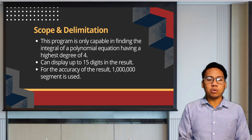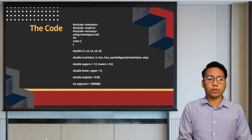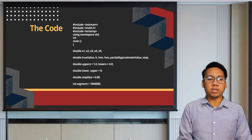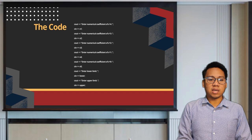In this code, we provided holders for the value of the numerical coefficients of the polynomial we will be solving, set as x1, x2, x3, x4, and x0. It is where the numerical coefficient values will be stored. The segment used for this program is set to 1 million. The numerical coefficient of the polynomial equation is to be inputted by the user, and the upper and lower limits are also set to be user-inputted.